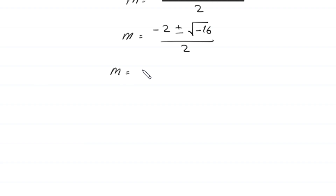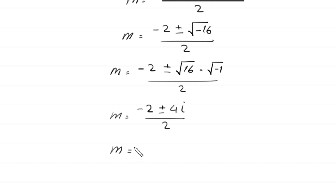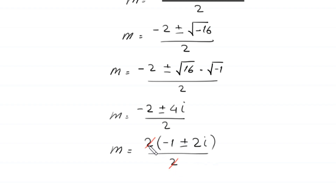Next, m equals negative 2 plus or minus square root of negative 16 divided by 2. The square root of negative 16 can be written as square root of 16 times square root of negative 1, divided by 2. From the numerator, we factor out 2 as a common factor, giving 2 times negative 1 plus or minus 2i, divided by 2. These 2s cancel, and we get m is equal to negative 1 plus or minus 2i.